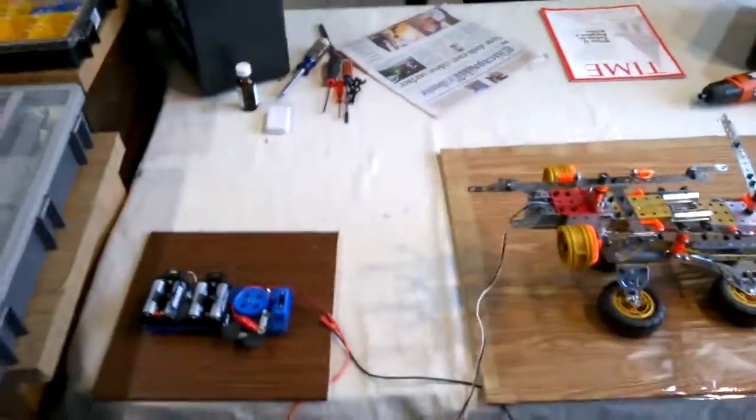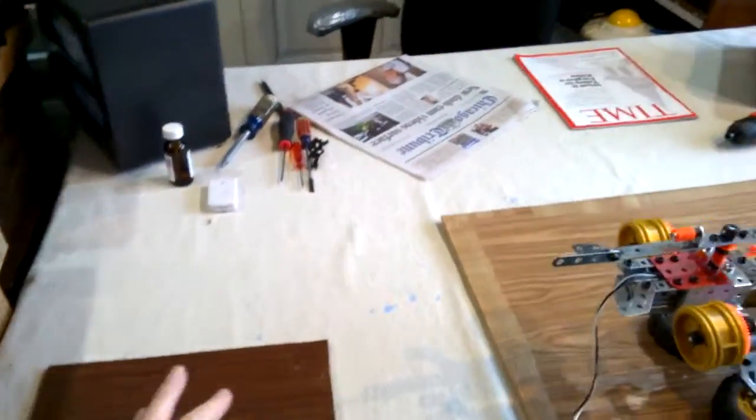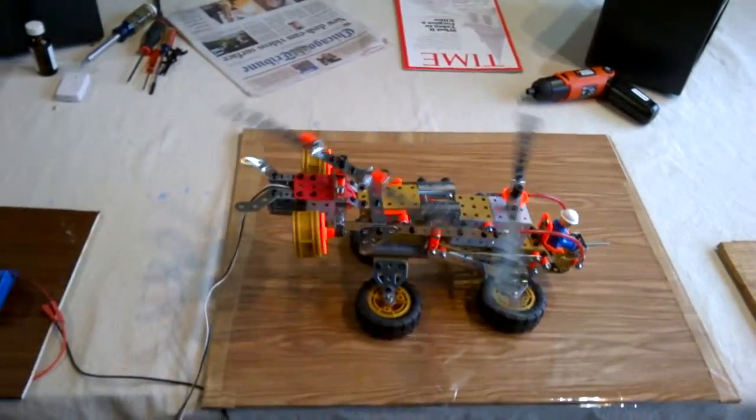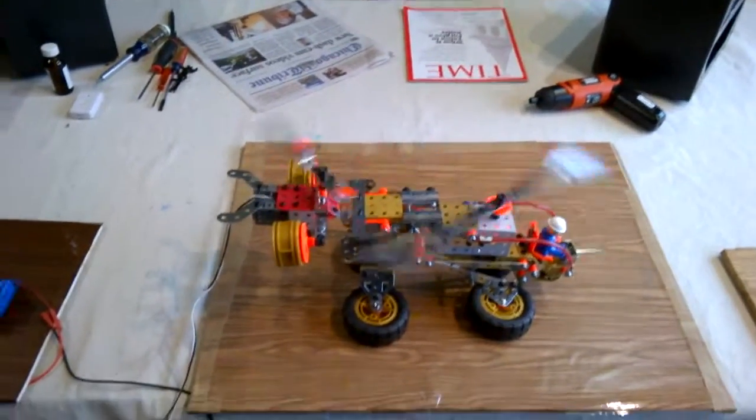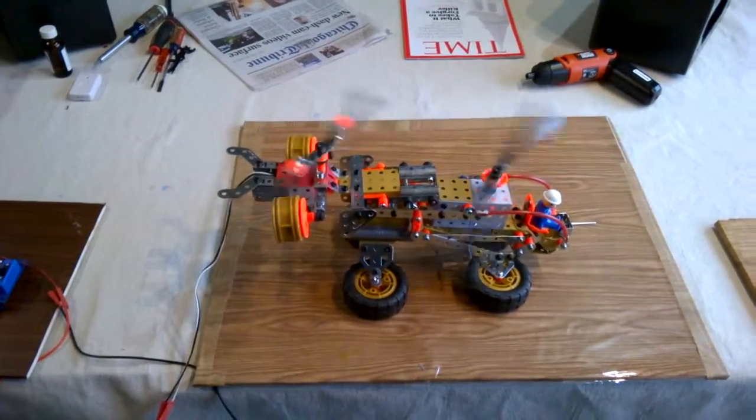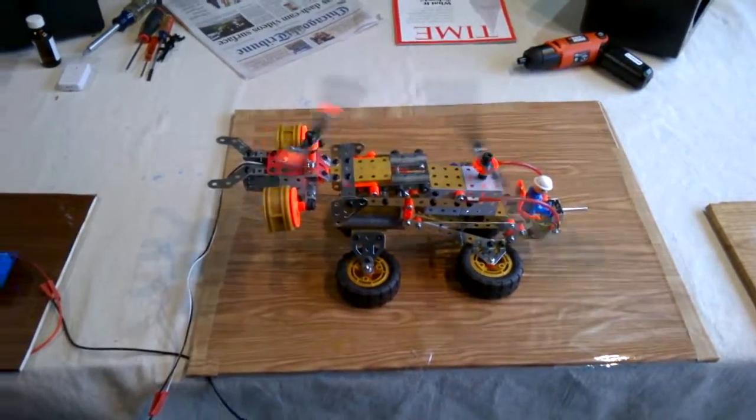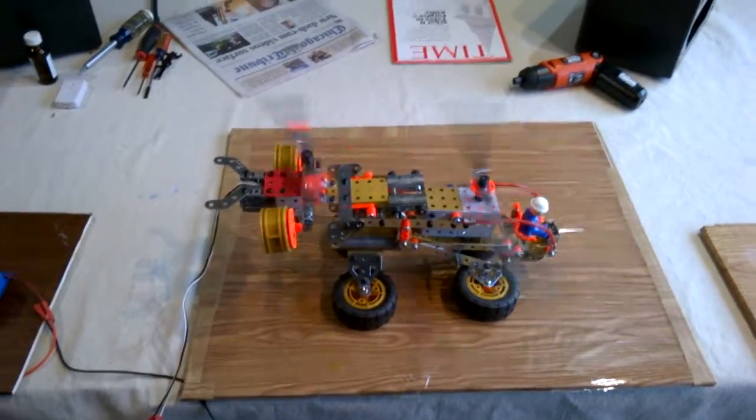So let's get it going. Let's get this puppy started. There you go. You can see them spinning in opposite directions. You can also hear the vibration. That's because that shaft is not perfectly straight.